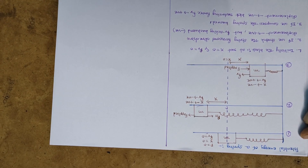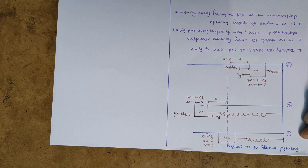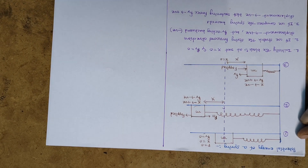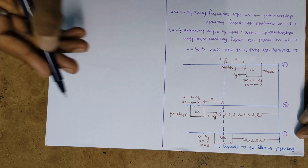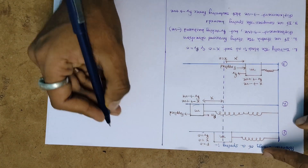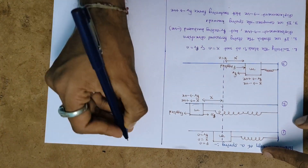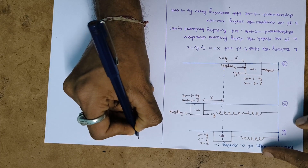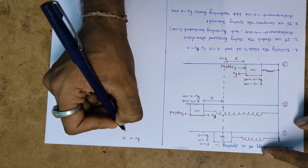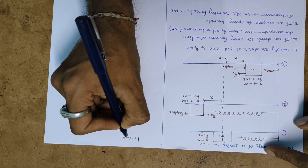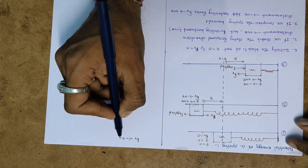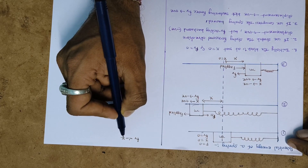These three points — point one, point two, and point three — have been covered. Now coming to the derivation part. From the diagram, we can understand that the restoring force Fr is directly proportional to displacement, but it is negative because the restoring force always acts in the opposite direction to displacement.